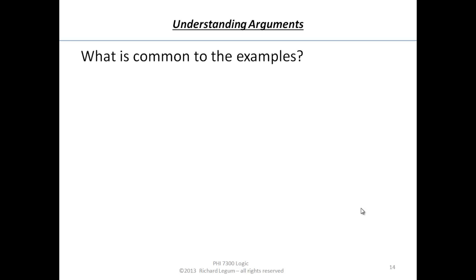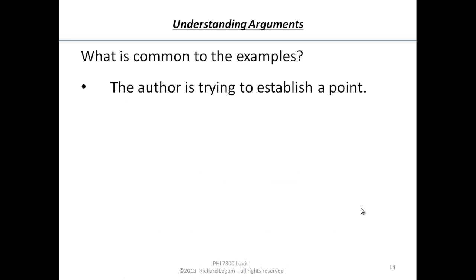Now let's try to summarize and figure out what our examples have in common, to help us get a handle on understanding arguments. Notice in each case, the author of the argument is trying to establish a point. In the case of the Supreme Court decision, the letter writer was supporting the Supreme Court's decision. In the case of the death penalty, the author was arguing against establishing the death penalty.